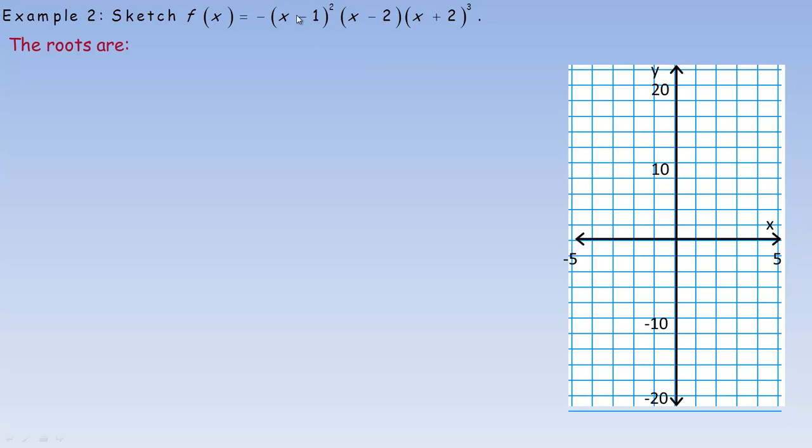The roots would be, we could set each of these factors to 0, one root would be at 1 because x minus 1 is a factor here. Because of the power of 2, that's called a double root. We have a single x minus 2 here, so 2 would be a root as well. And this would give you negative 2, and that's a triple root because of the power of 3 here. The names double and triple come from the exponent.